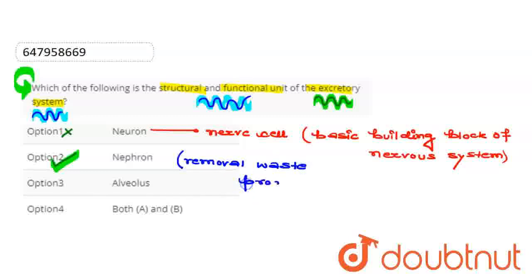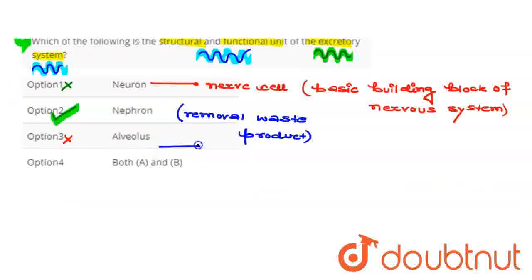Okay, after that, the third option we have here is alveolus. If we talk about this, these are tiny air sacs at the end of bronchioles, and we can say that these are the structural units in the respiratory system, so this option is also wrong.